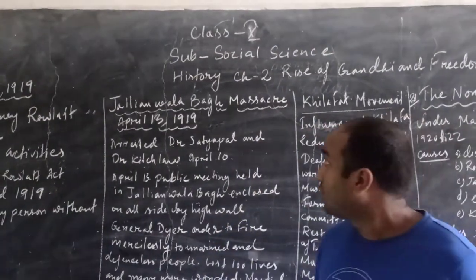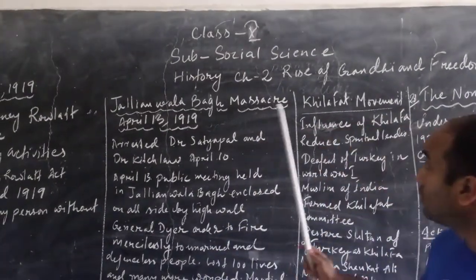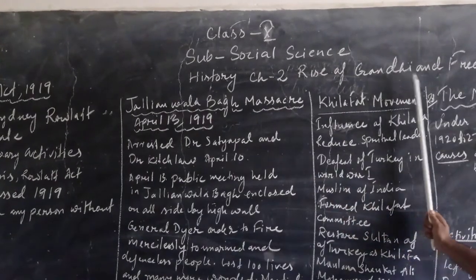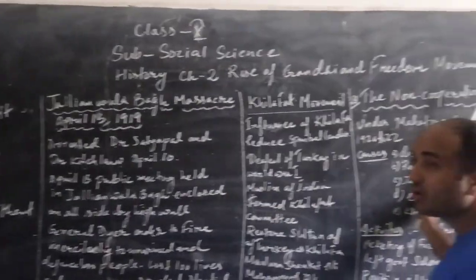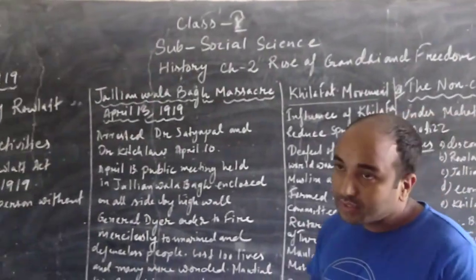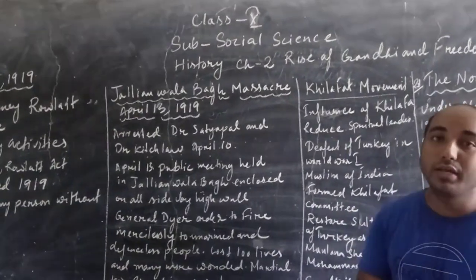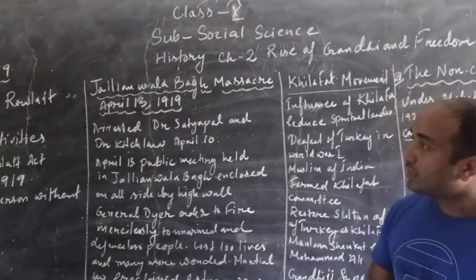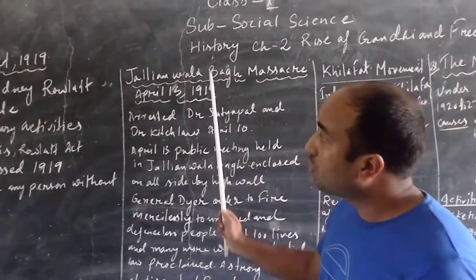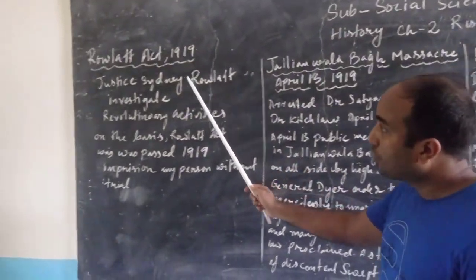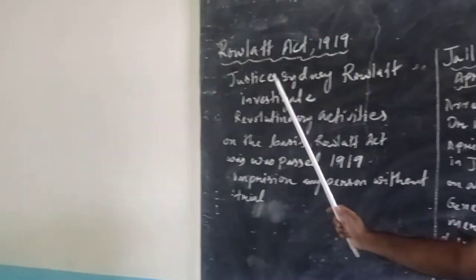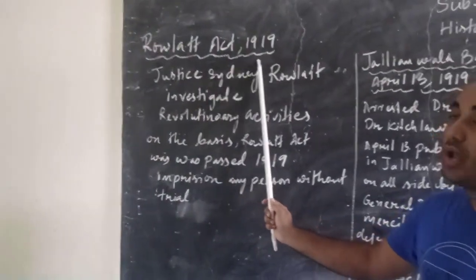Hello students, today we are going to continue the lesson of chapter 2, Rise of Gandhi and Freedom Movement of India. In the last class we studied about Mahatma Gandhi, his biography. Today we will study here — first we will go to one very important event of our Indian history, that is the Rowlatt Act of 1919.